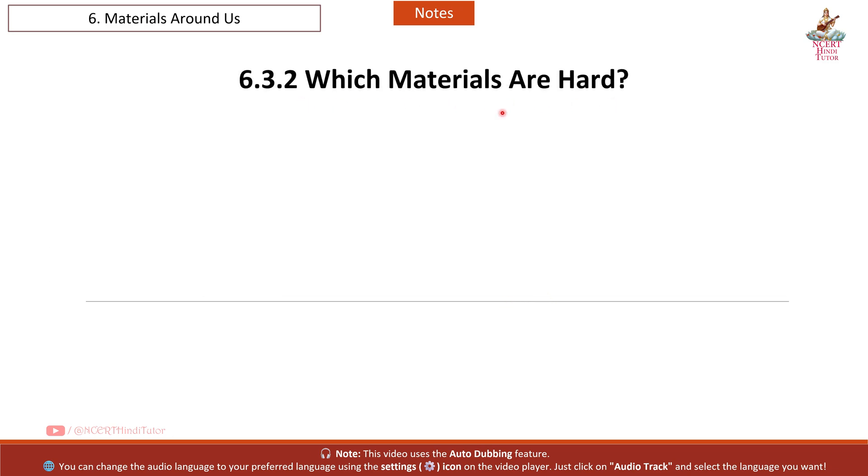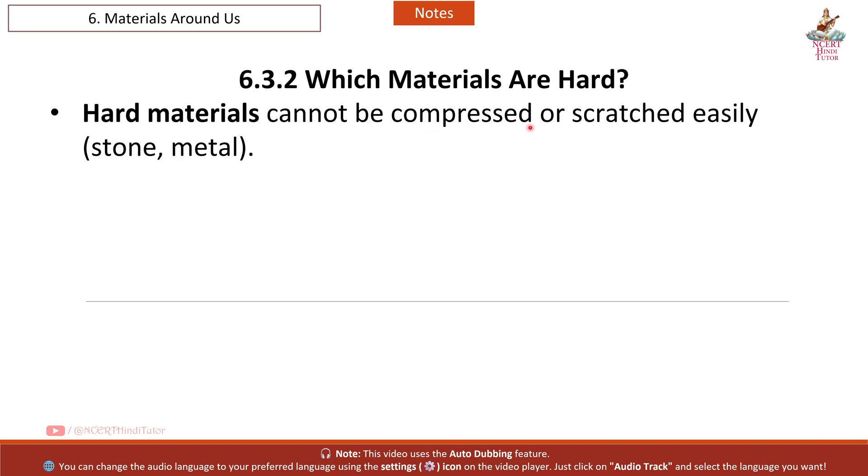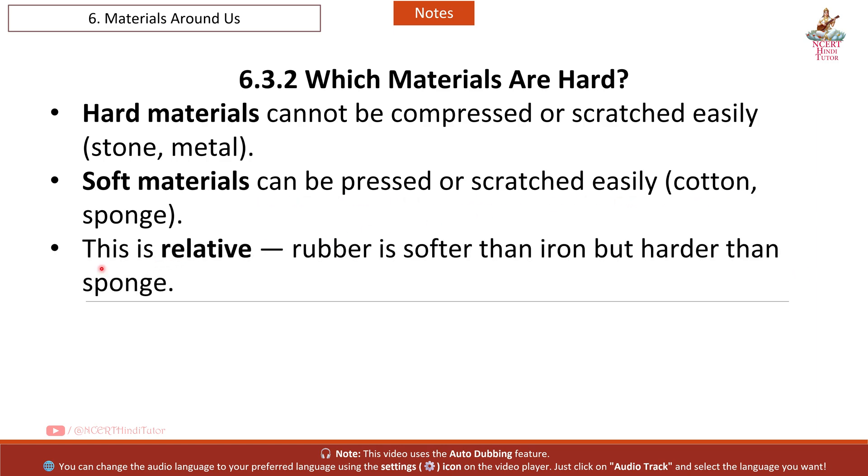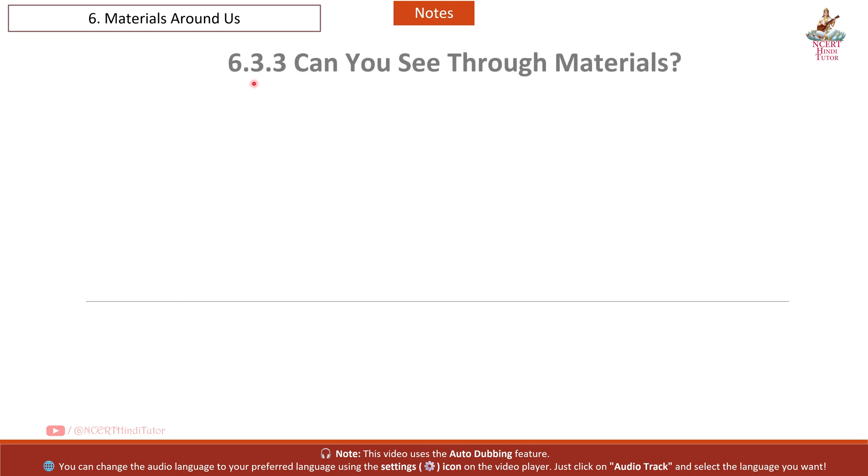6.3.2 Which materials are hard? Hard materials cannot be compressed or scratched easily: stone, metal. Soft materials can be pressed or scratched easily: cotton, sponge. This is relative. Rubber is softer than iron but harder than sponge.